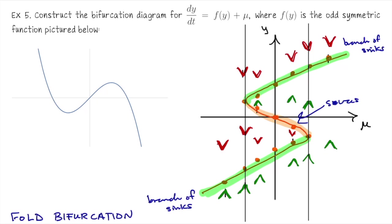The main thing to keep in mind with this fold bifurcation is that in the middle there we have two steady state possibilities. If y is high, there's a steady state up there, and if y is low, there's a steady state down there — kind of dueling steady state possibilities for a solution y to this differential equation.